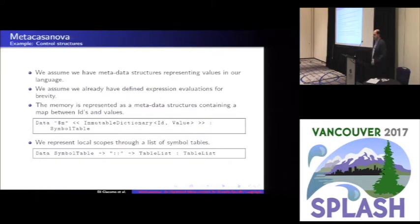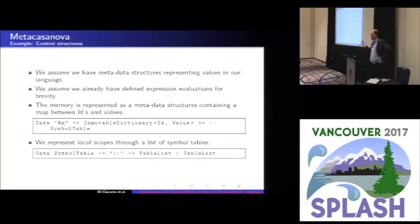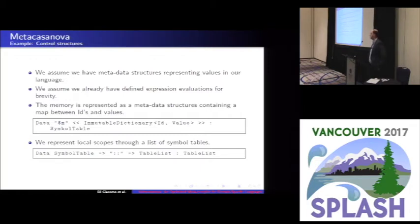I'll show an example in MetaCasanova defining if-then-else and while loop with variable scoping. We assume we have metadata for atomic values and a function to evaluate expressions. Memory is represented as a metadata structure encapsulating a .NET dictionary for performance reasons, though a list of pairs with an ID and value would also work — cleaner but slower. We also define a data structure for a list of symbol tables to support scoping at each nesting level.